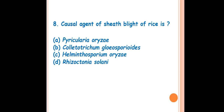Question 8: The causal agent of seed blight of rice is? The answer is D — Rhizoctonia solani. Seed blight of rice produces water-soaked lesions surrounded by a brownish margin on the leaf sheath. If you want to know more about its symptoms, please check my previous video on important diseases of rice — link in the description.